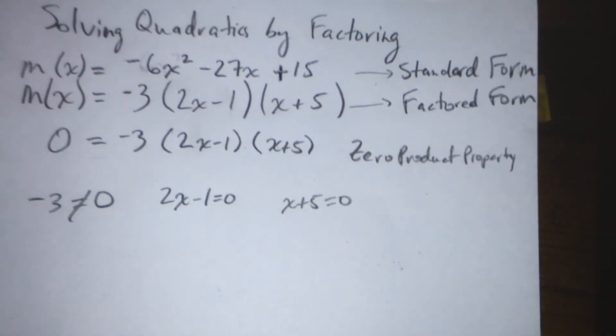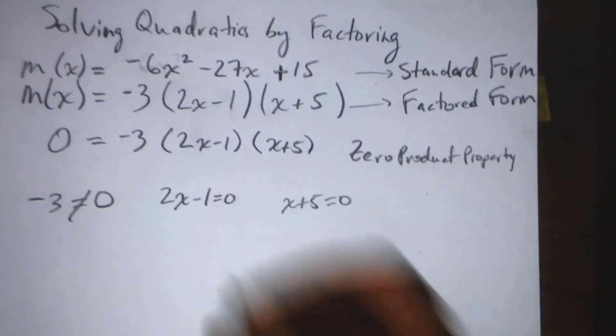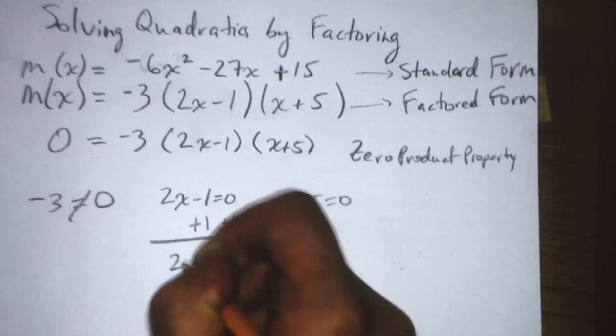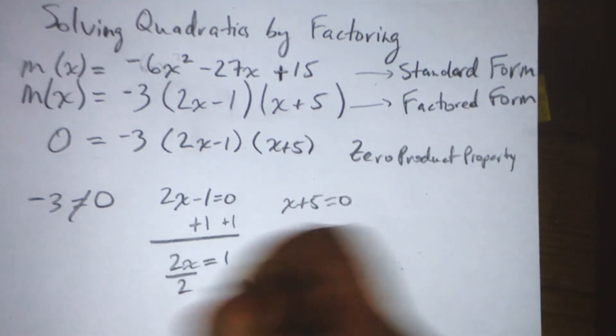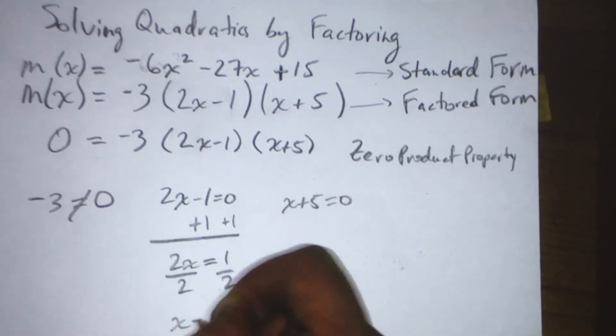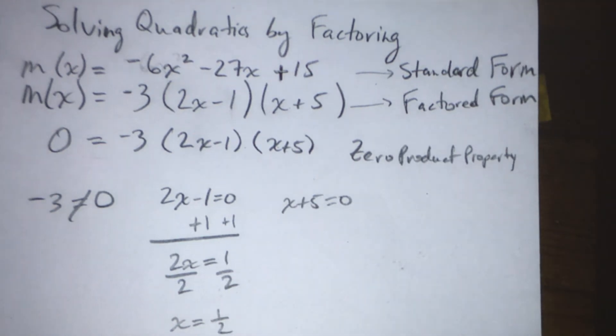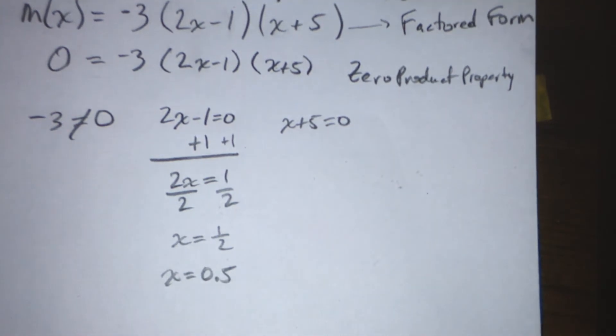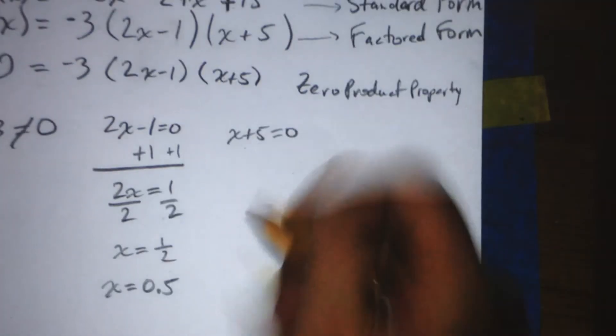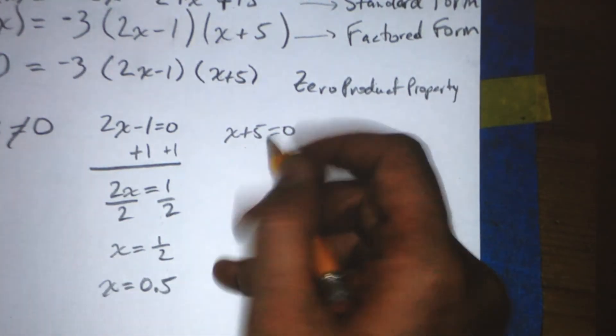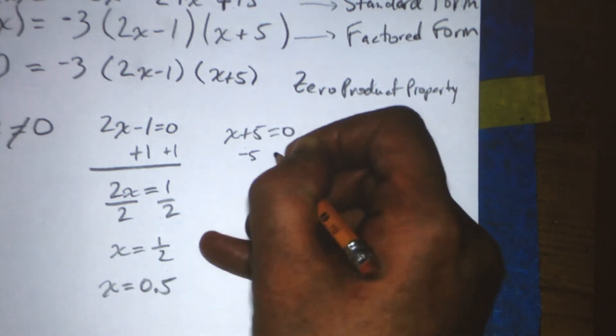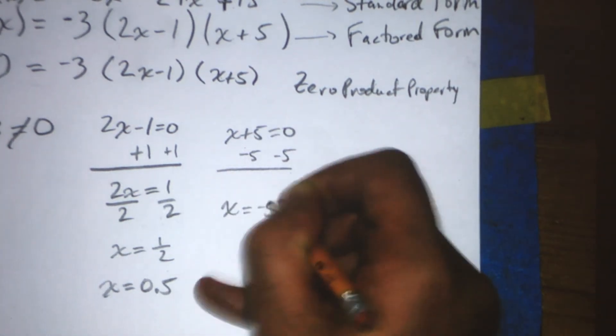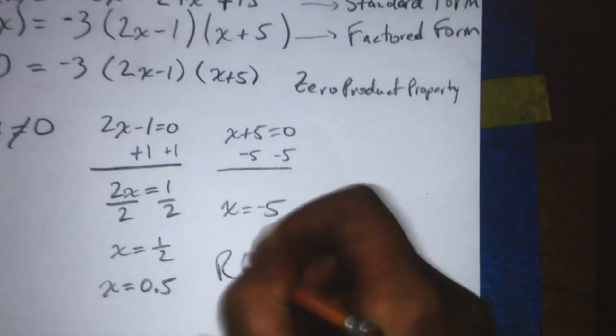Now, solve for the x's that make this true. This is very easy. Add 1 to both sides and get 2x equals 1. Divide both sides by 2 and get x equals 1 half, which of course is the same as x equals 0.5. Now, set the x plus 5 factor equal to 0. Subtract 5 from both sides and get x equals negative 5. And both of these are roots.